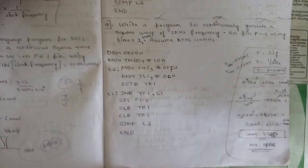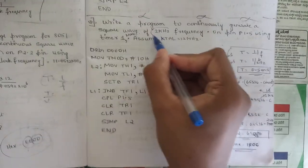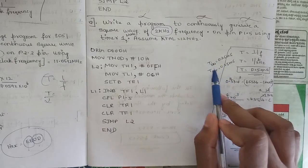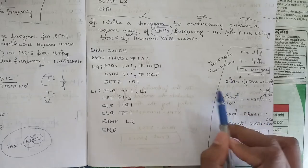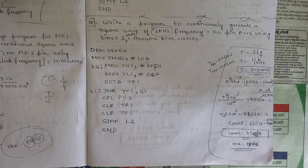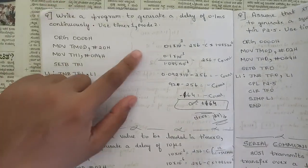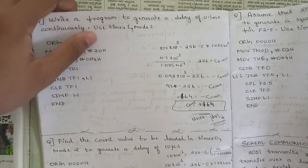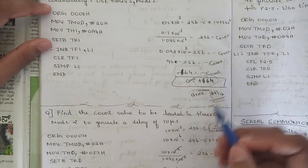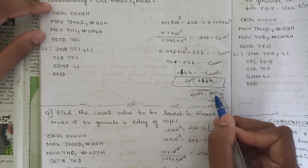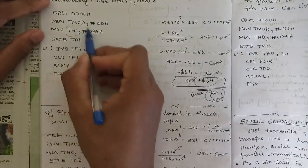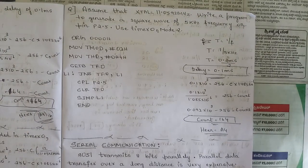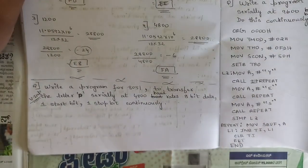In a similar question where frequency is given, substitute T = 1/F to get T = 0.5 milliseconds, divide by 2 to get delay of 0.25 milliseconds, then continue the calculation and write the same code structure. For mode 2 programs, only TH1 is used — no TL timer — because the count fits in 2 bytes. These are very important programs for mode 2, both timer 0 and timer 1.